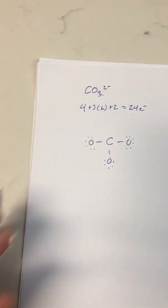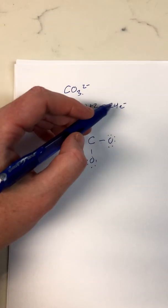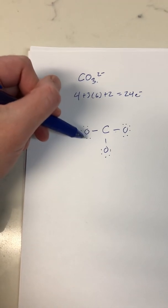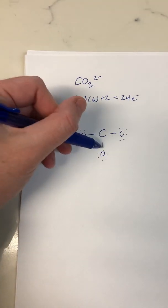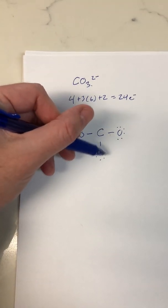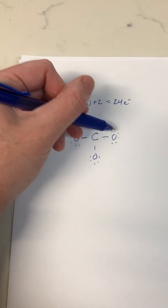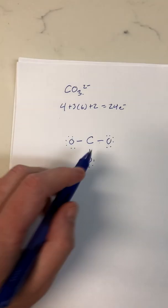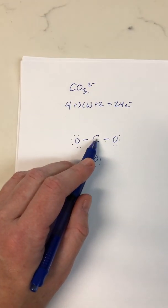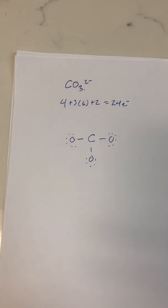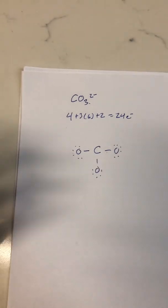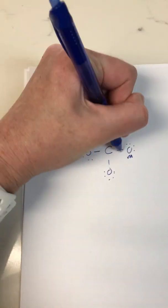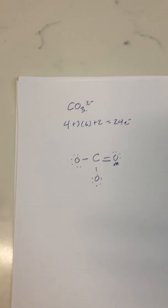Carbon doesn't have one. If we go and count all of our electrons — 2, 4, 6, 8, 10, 12, 14, 16, 18, 20, 22, 24 — we have enough electrons, but the problem is carbon is left without an octet. Our only option is to make a double bond.